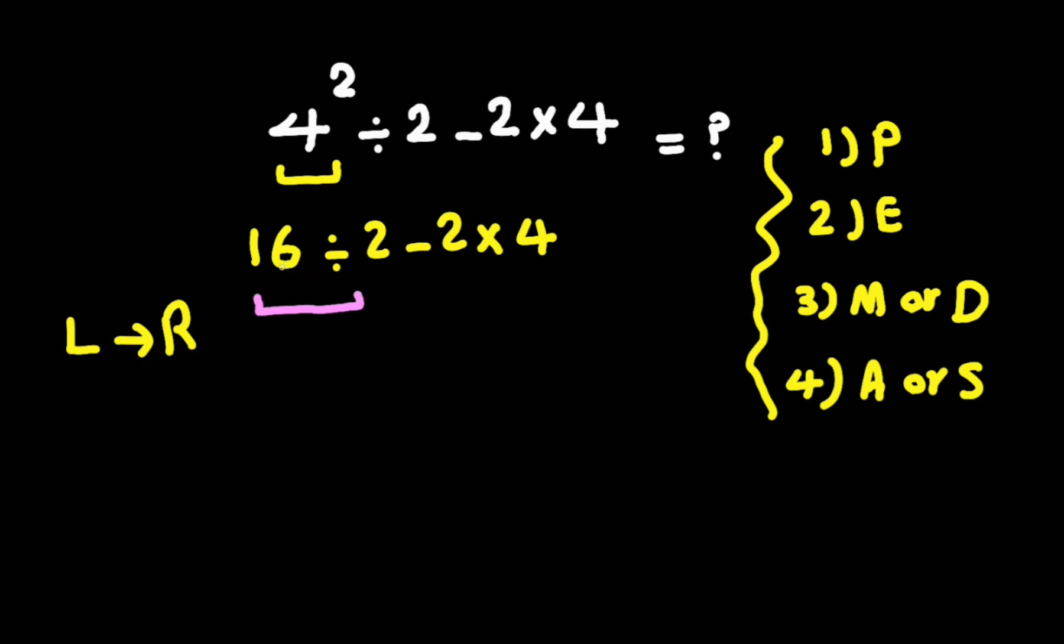16 divided by 2 gives us 8. And now between subtraction and multiplication, we have to solve this multiplication: 2 times 4 gives us 8. Now we have 8 minus 8.